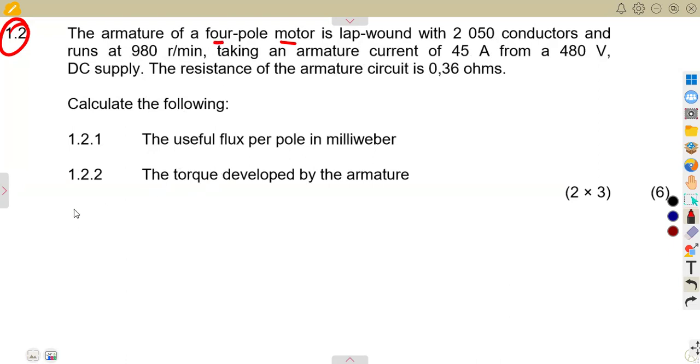So what are we given? The pole pairs. Let us just consider our data. The P equals 4 divided by 2, that means we've got 2 pairs. Remember in a lap-wound, C is equal to 2P, so 2 times 2 that will be 4, with 2050 conductors.